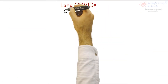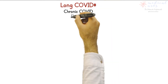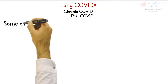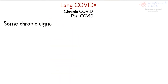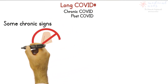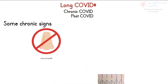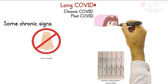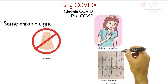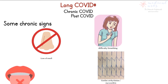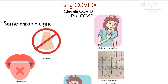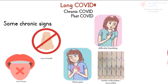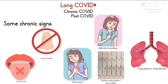Although most people with COVID-19 get better within weeks of illness, some people experience post-COVID conditions, as quoted by the CDC. These cases are now referred to as chronic COVID, long COVID, or post-COVID — when signs and symptoms persist for more than four weeks. This crucial subject is still under study and data collection and will be discussed in more detail in another video.